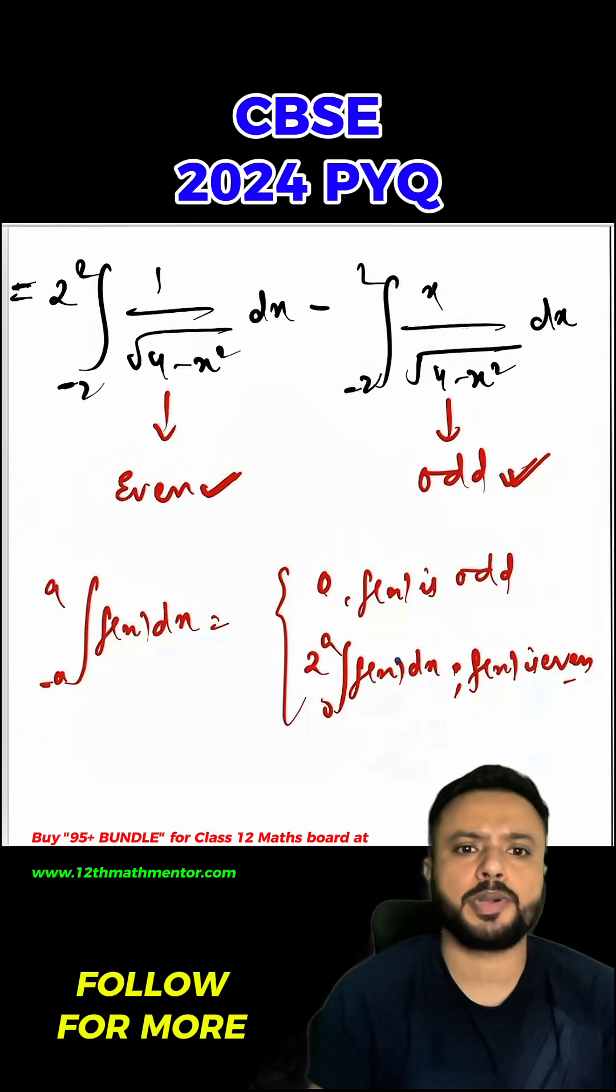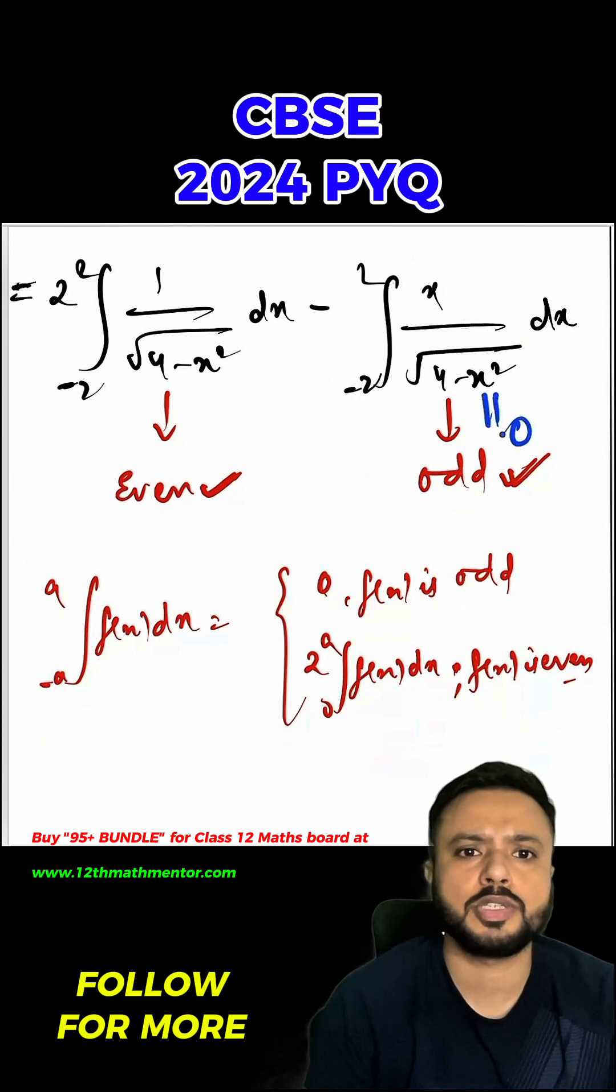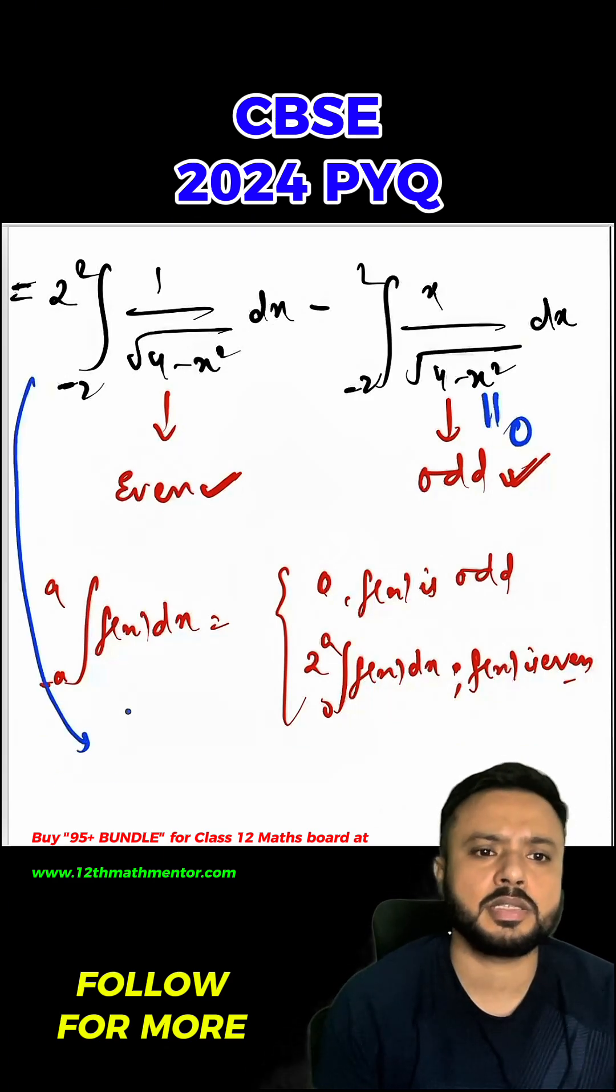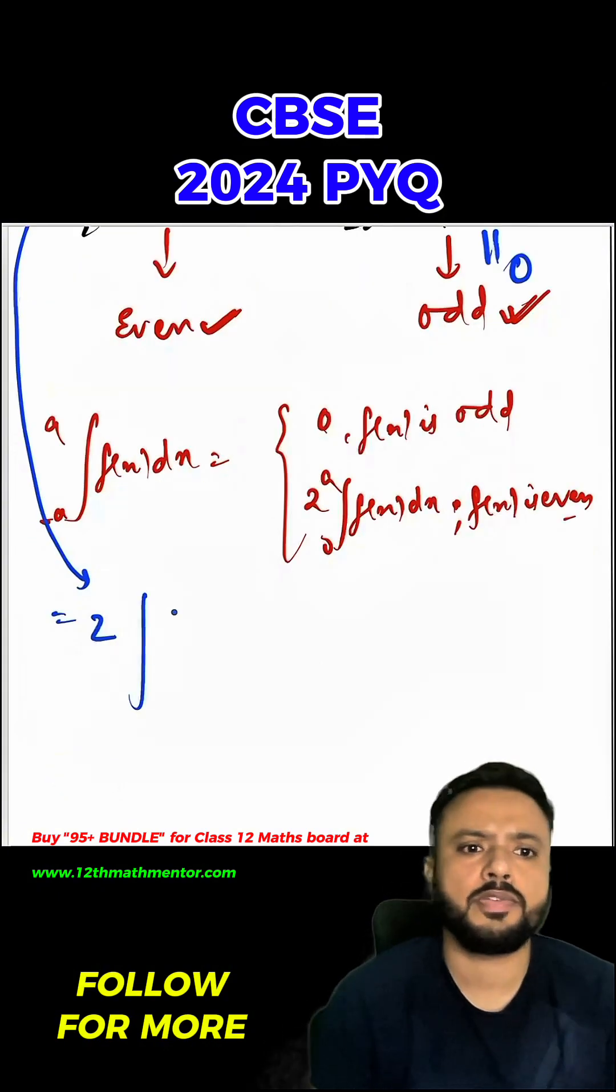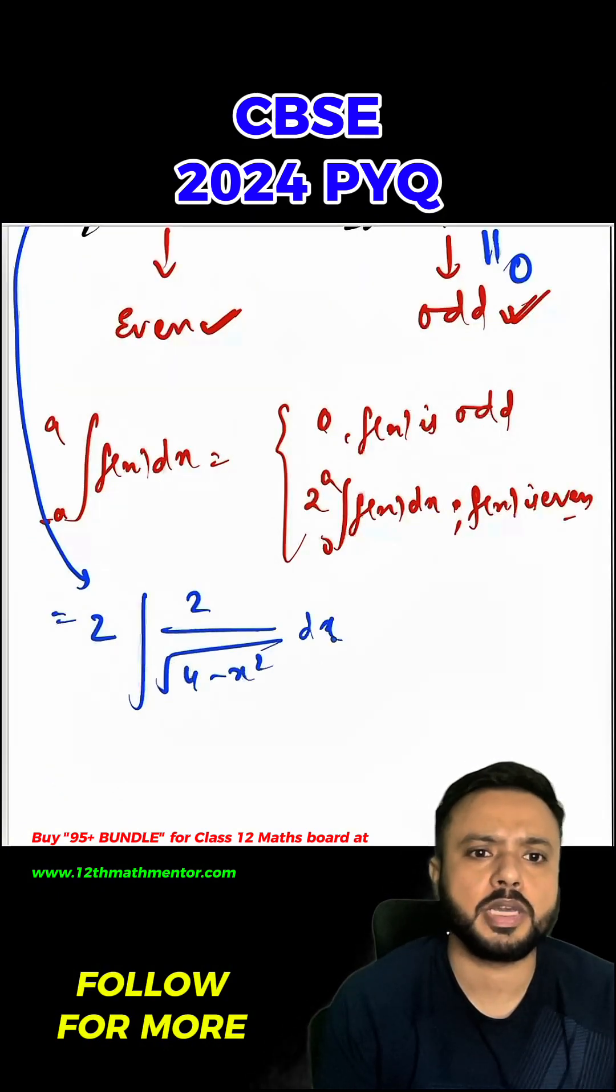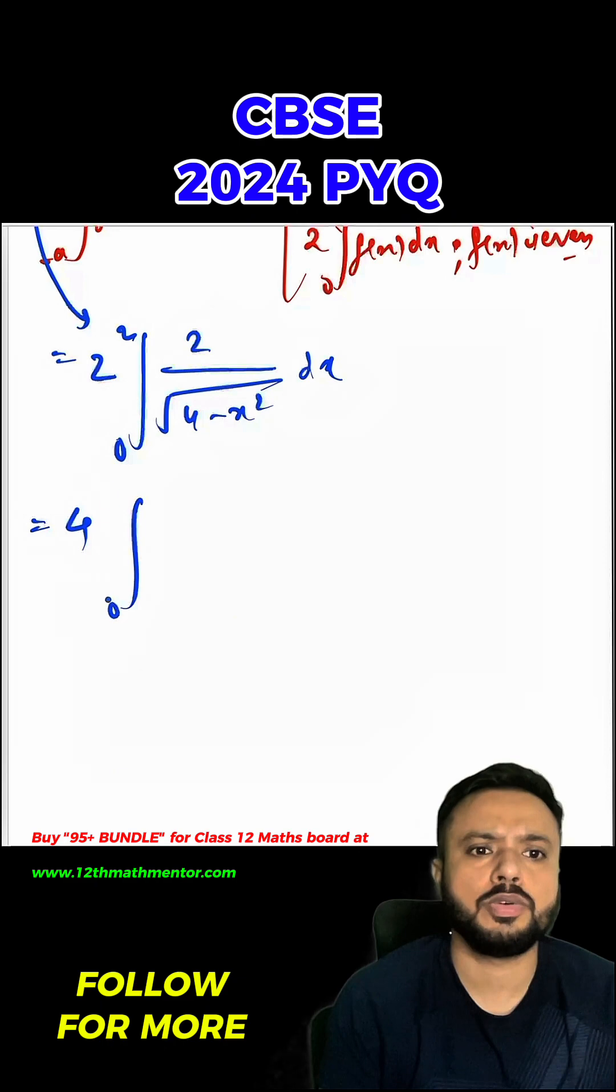So now we can use this particular property. Since this function is an odd function, its value is 0. And I can rewrite this integral as 2 times the integral from 0 to 2 of 2 upon root of 4 minus x square dx, which is basically 4 times integral from 0 to 2 of 1 upon root of 4 minus x square dx.